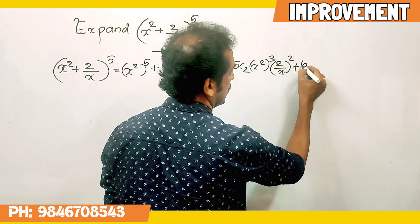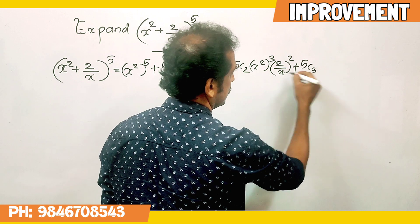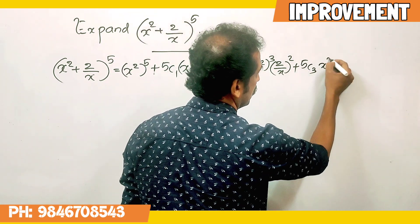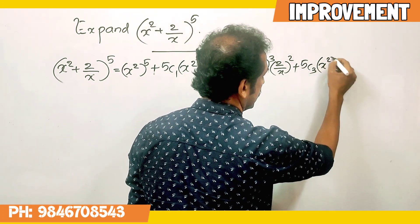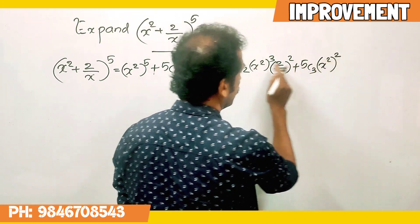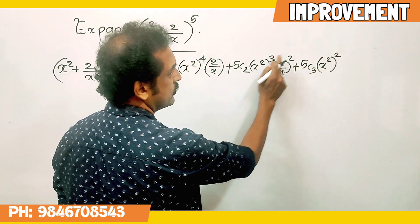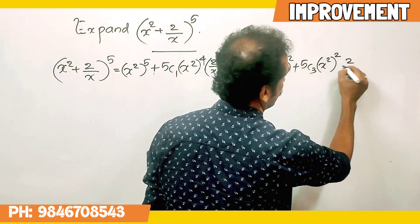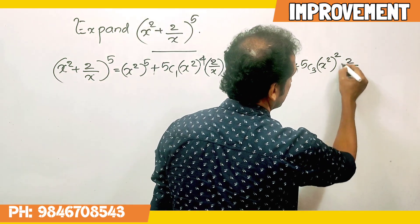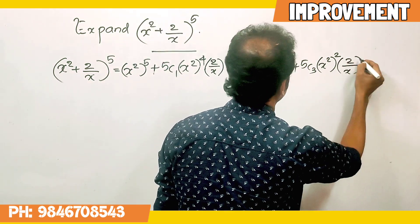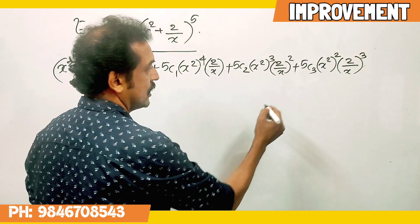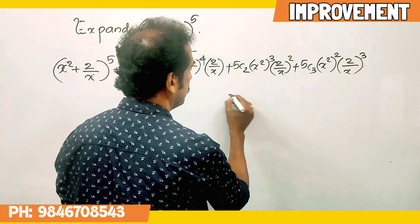Next, 5C3, x squared whole square, into 2 by x raise to 3. Remember that.